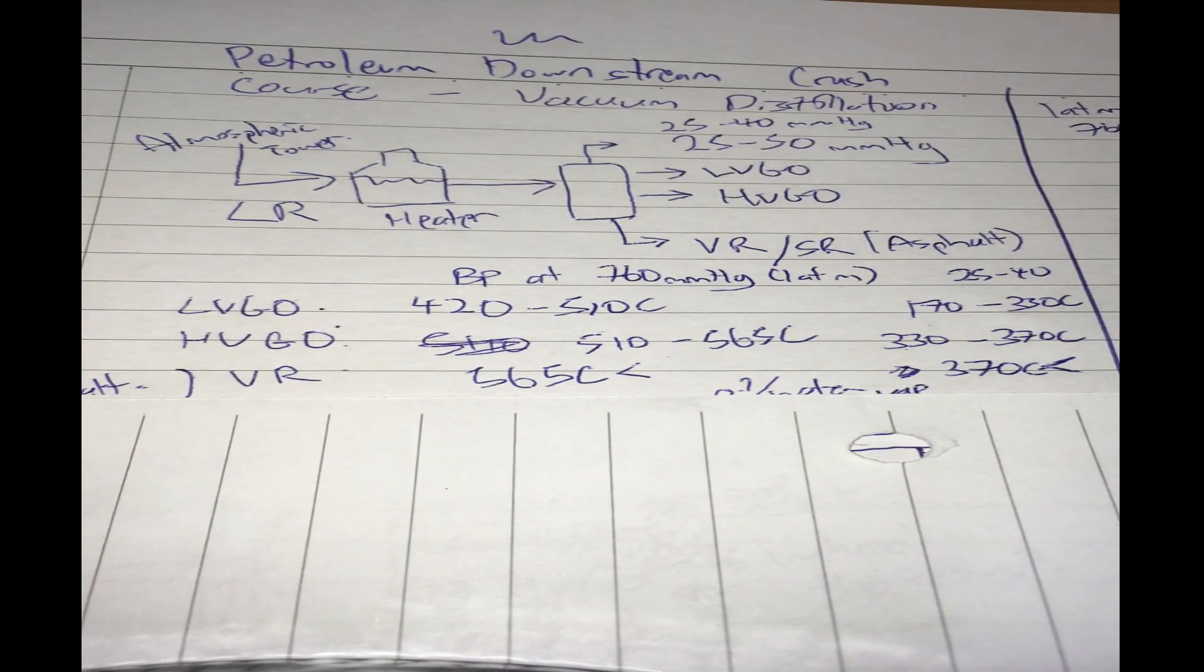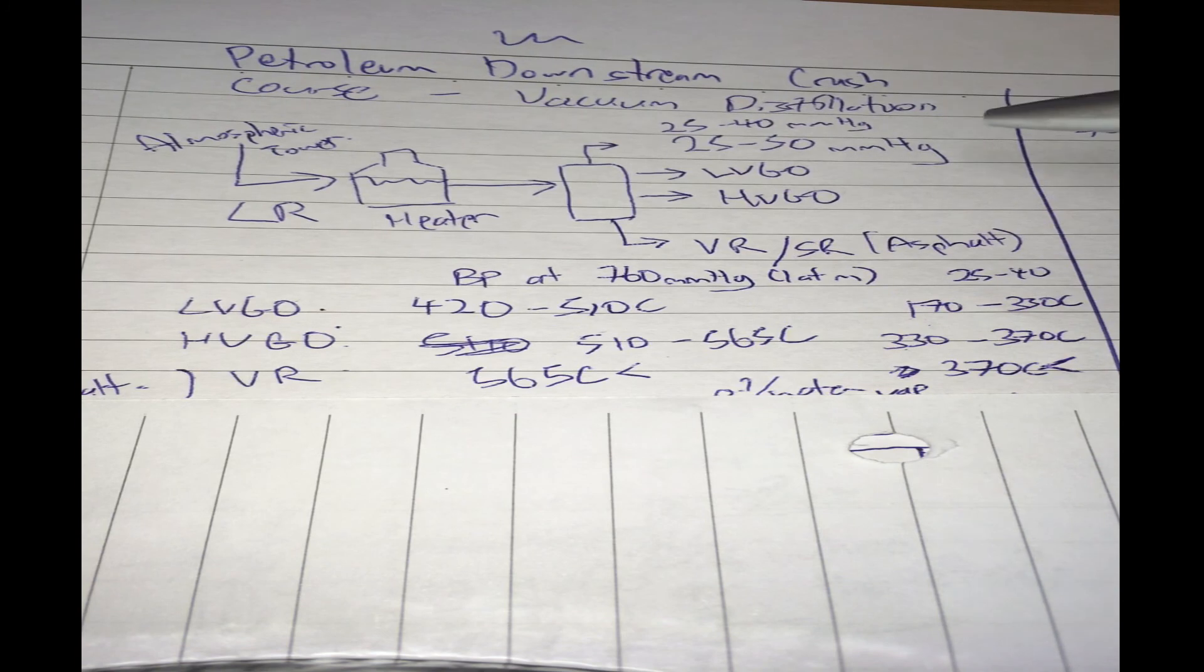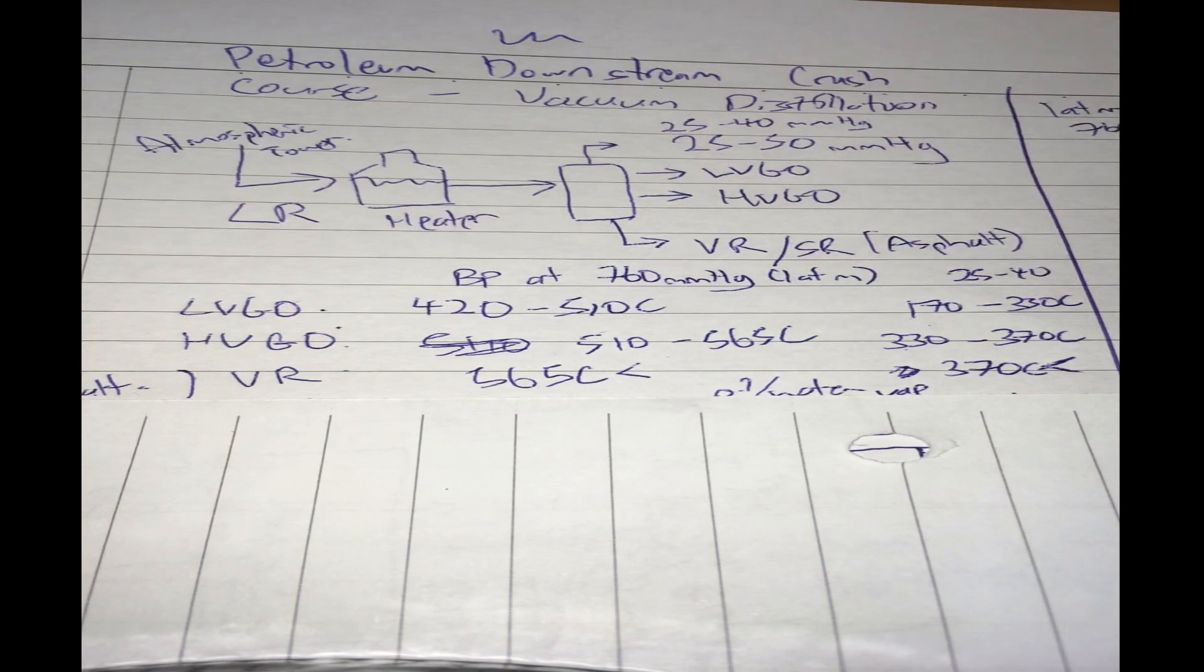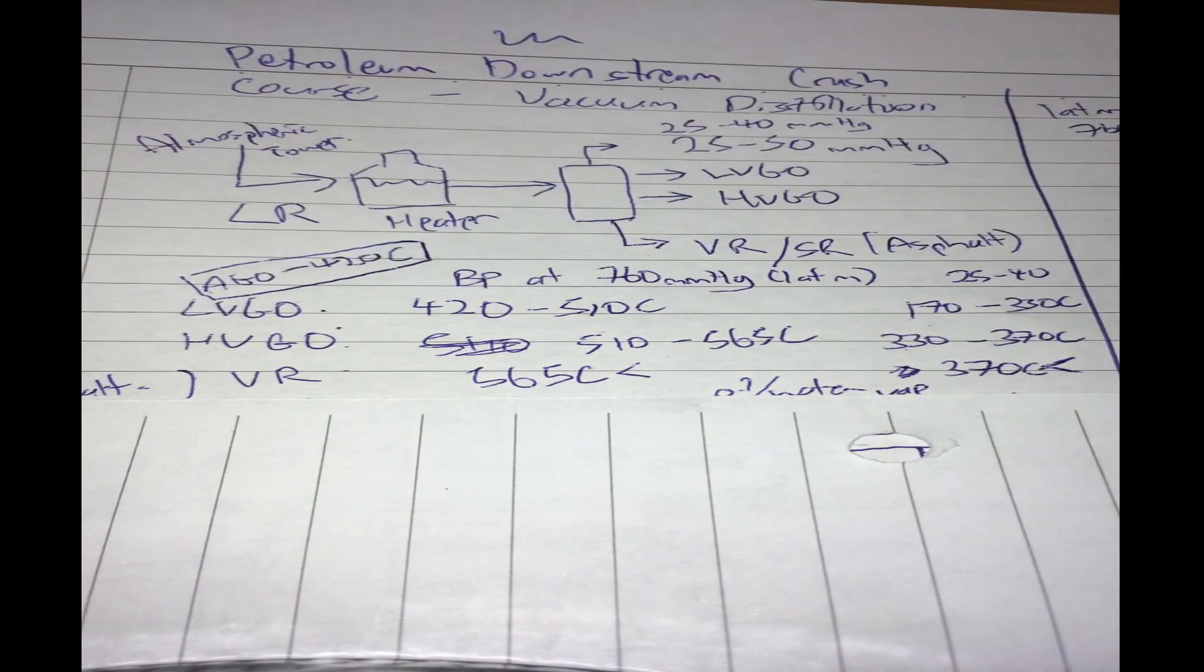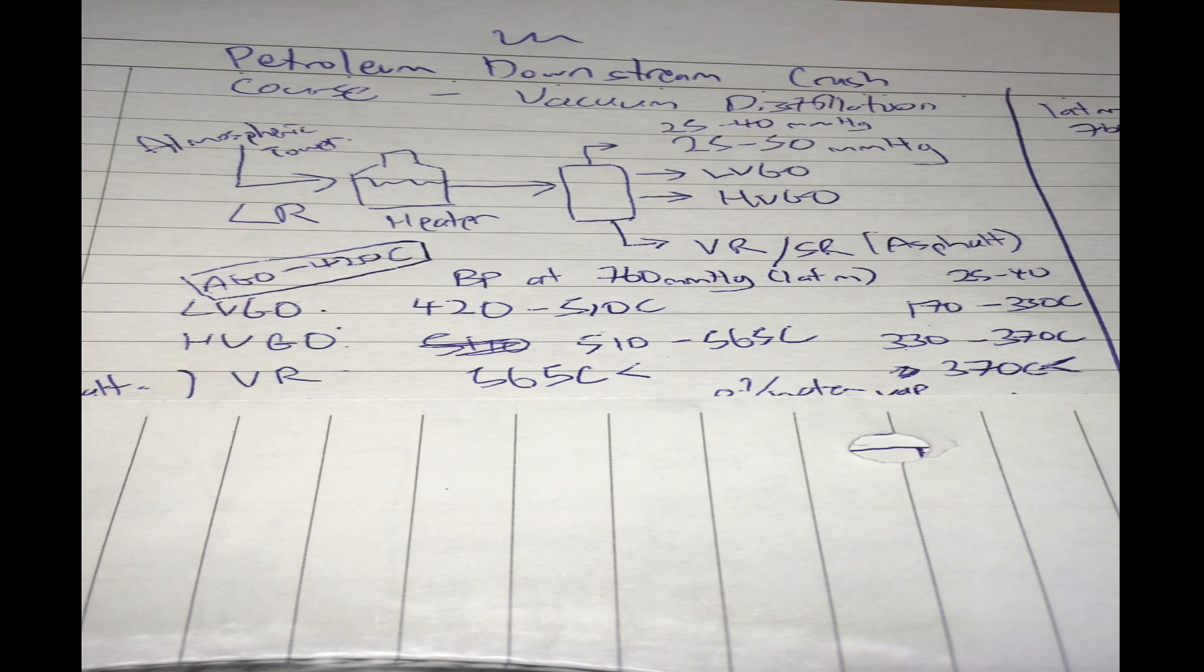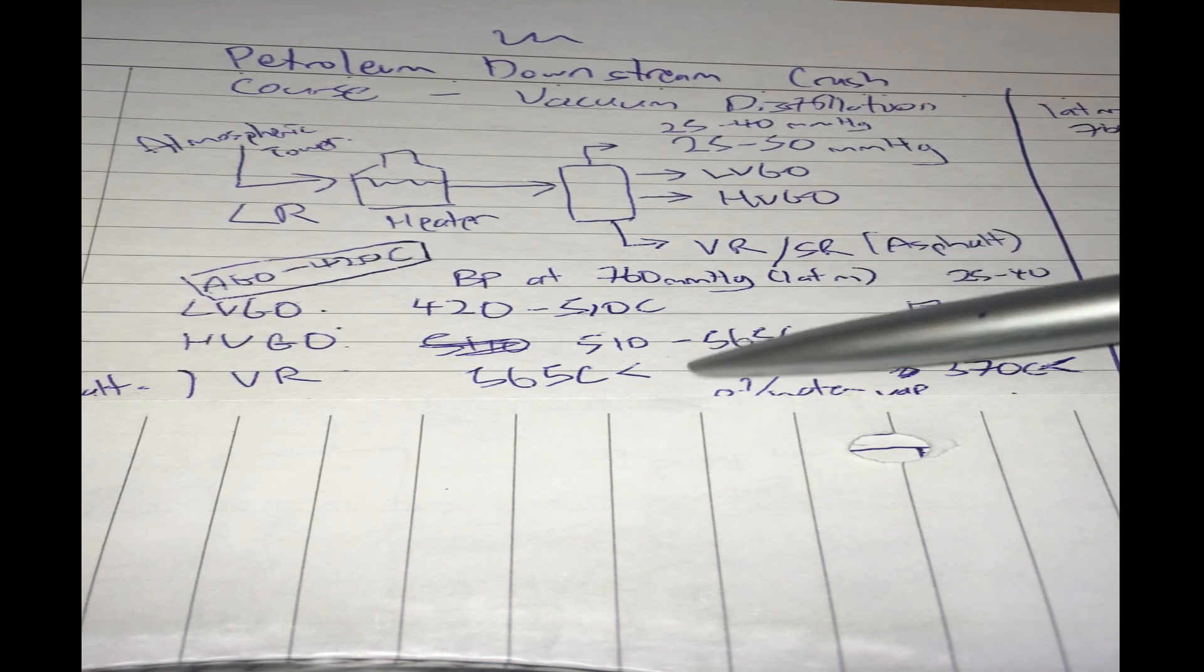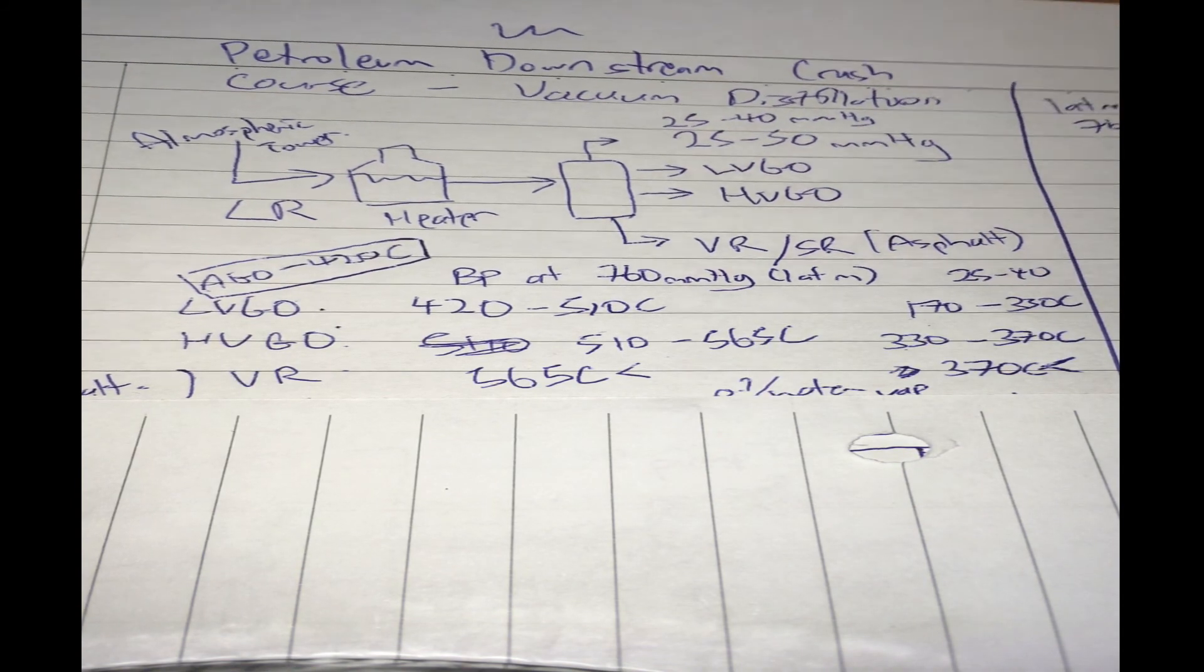Let me introduce you to the typical boiling points of light vacuum gas oil, heavy vacuum gas oil, and vacuum residue. Light vacuum gas oil has a boiling point of about 420 to 510 degrees C. Heavy vacuum gas oil has a boiling point of 510 to 565°C at one atmosphere of pressure. Vacuum residue has a boiling point of 565°C and above, or 1050 Fahrenheit and above.